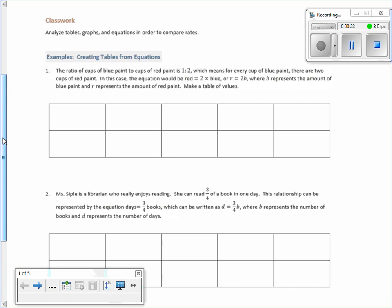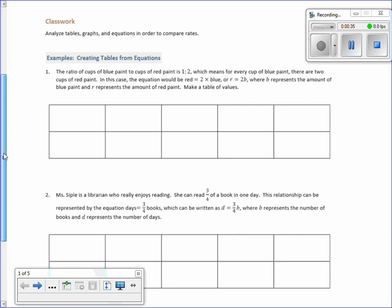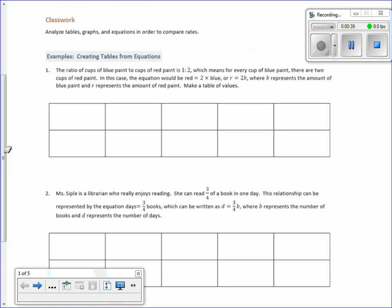So what we're doing in this lesson, it is lesson 19. We're going to be comparison shopping, unit price, and related measurement conversions. Classwork: analyze tables, graphs, and equations in order to compare rates. And our first example says to create a table using equations, creating tables from equations.